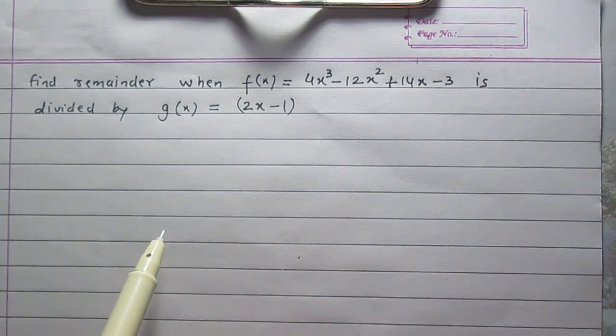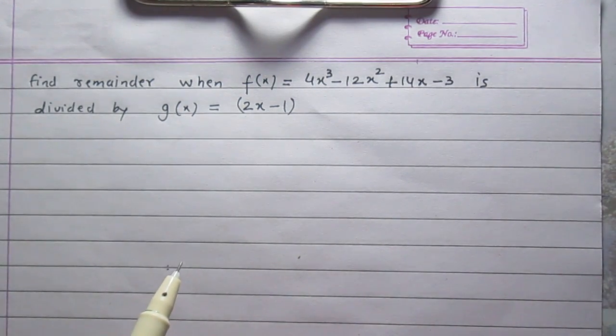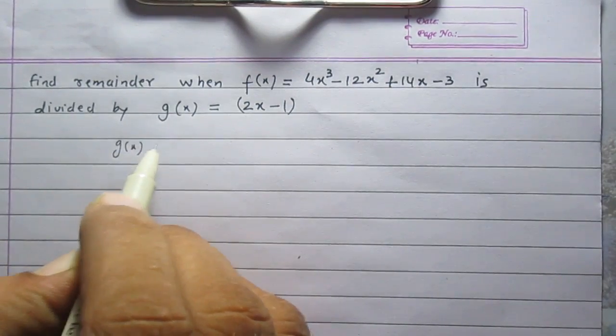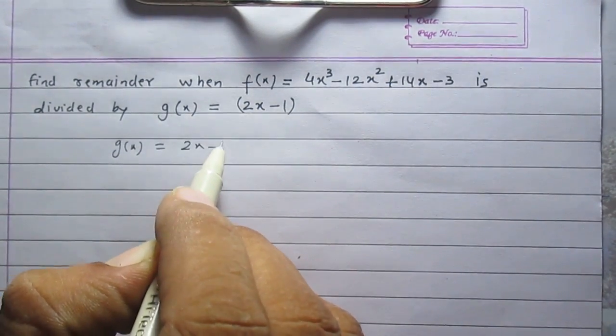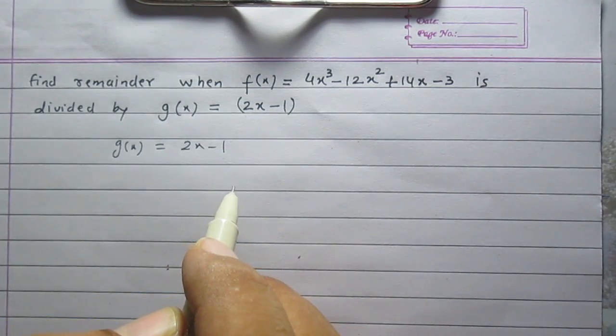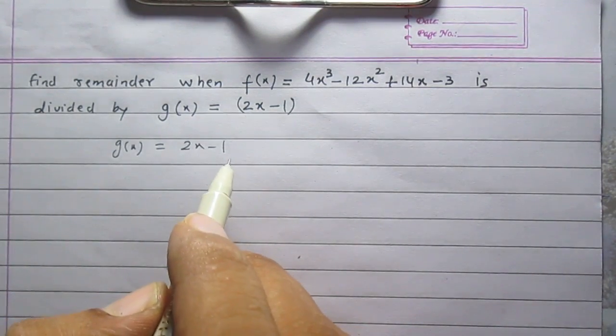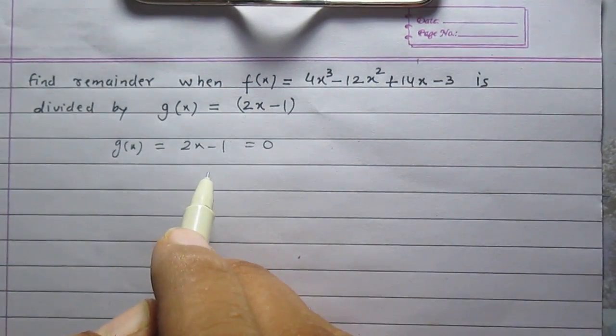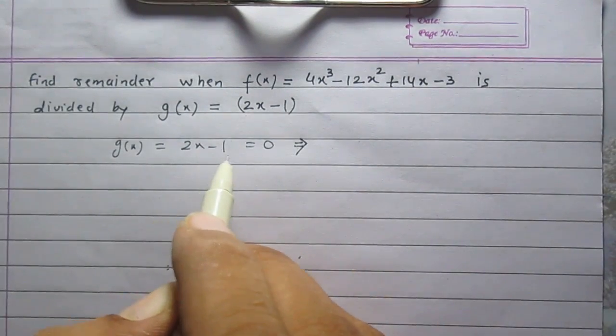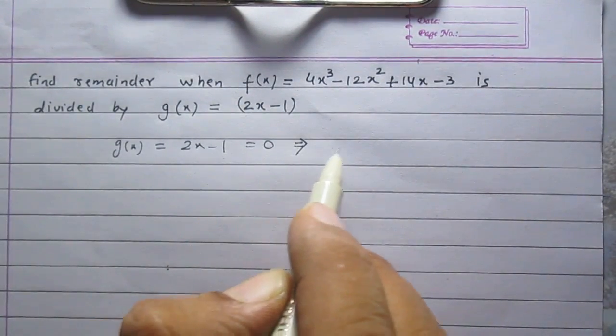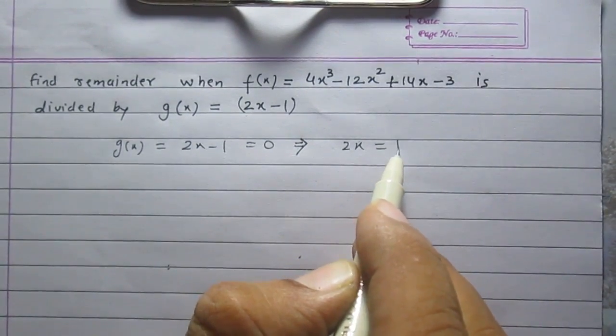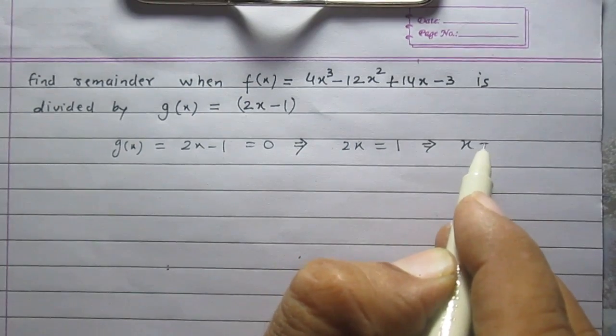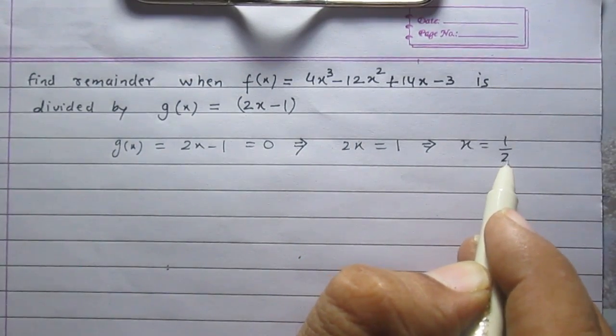In order to find remainder without actual division we will have to find first the zero of the divisor. The divisor is g(x) = 2x - 1. In order to find zero of the divisor we will have to equate the divisor with zero. Doing so we get 2x - 1 = 0, so 2x = 1 and finally we can say x = 1/2.